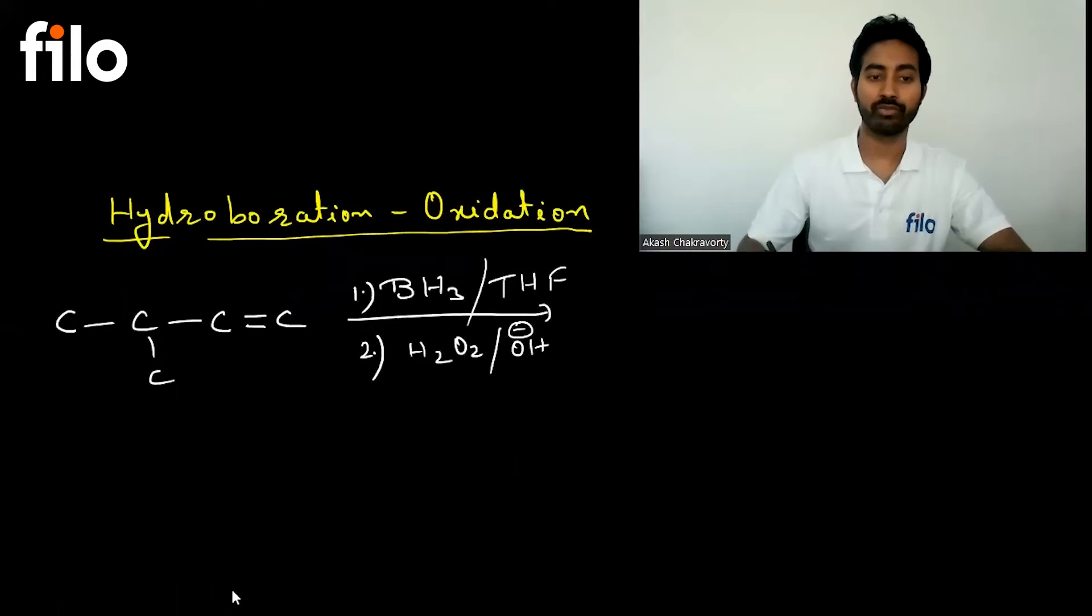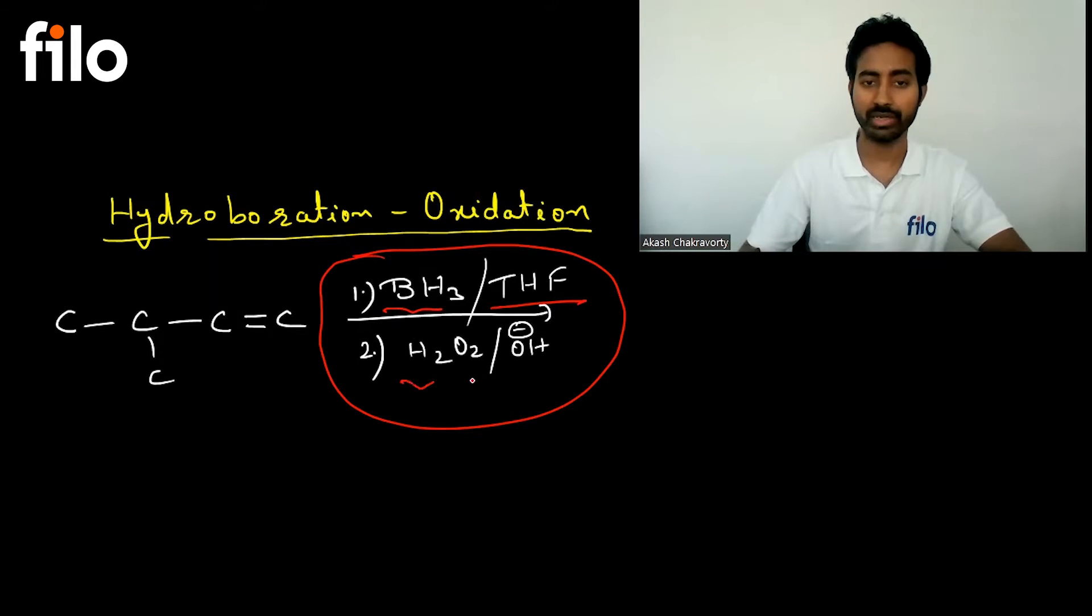First of all, how to identify that the reaction is hydroboration oxidation. You can see here we have a reaction. The reagents are BH3 with THF, and the second reaction is H2O2 in basic medium. If these are the reagents, it means this is an example of hydroboration oxidation. Right now we have a substrate here.